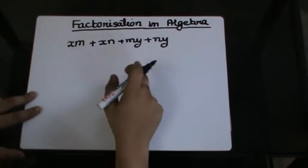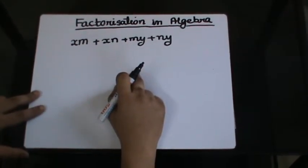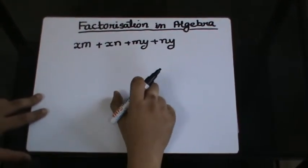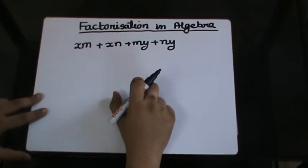And that's why I should go with the Type 2 factorization, which is known as grouping. So I am going to group the terms together in pairs and then factorize them.